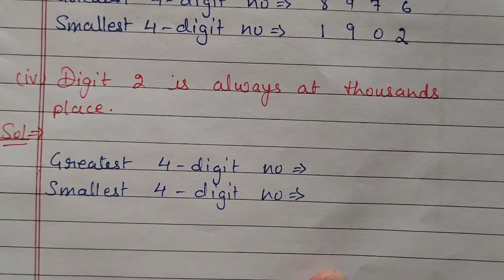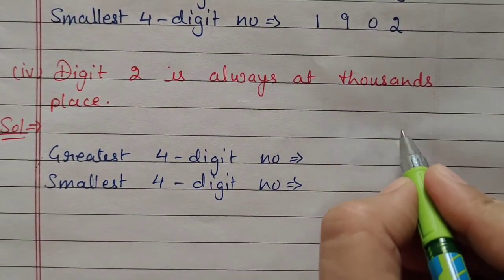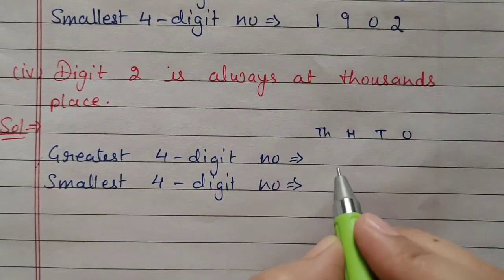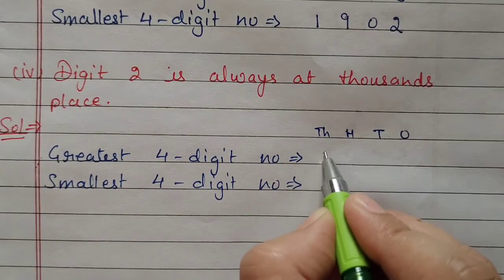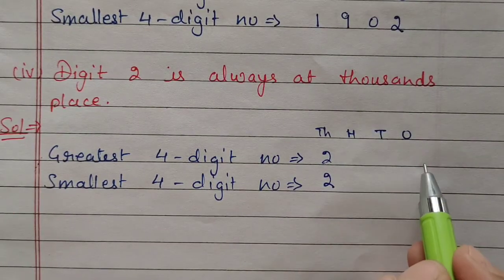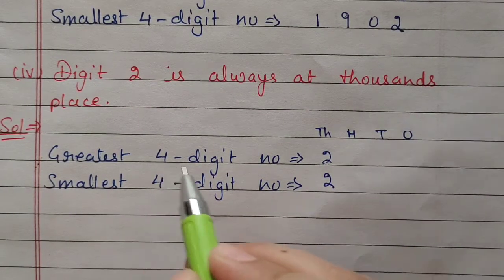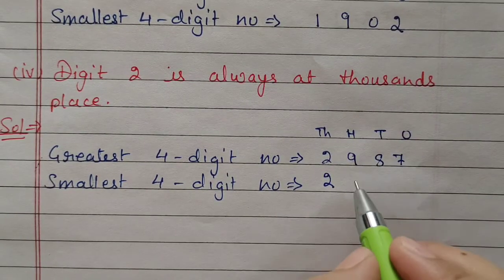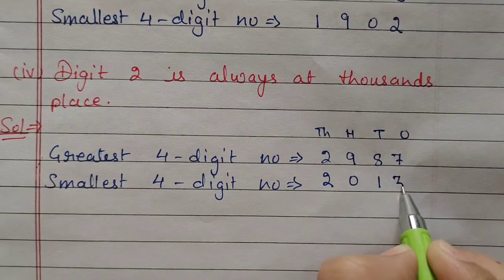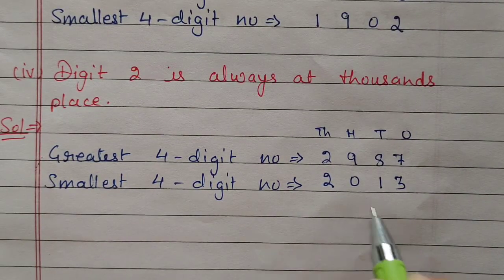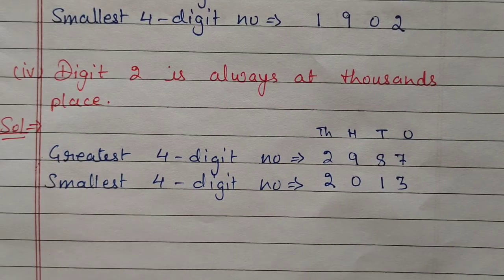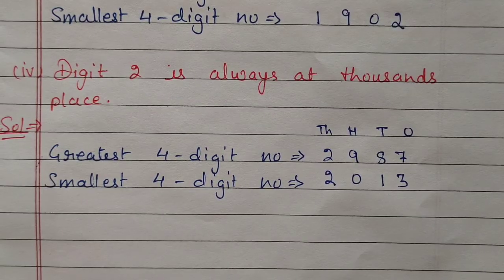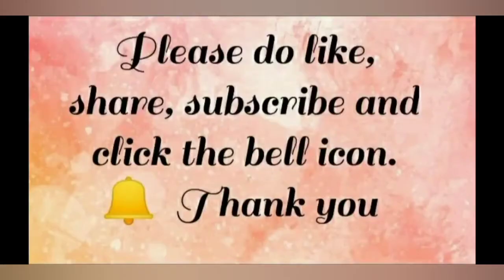Fourth condition: digit 2 is always at the thousands place. So the four places are ones, tens, hundreds, and thousands, with 2 fixed at thousands. For greatest, fill remaining 3 places with greatest digits 9, 8, 7, giving 2987. For smallest, use smallest digits 0, 1, and 3 — since 2 is already used — giving 2013. This completes the exercise. Hope you understood these questions. Thank you for watching this video.